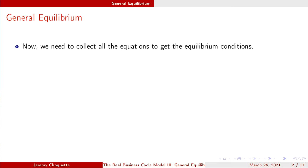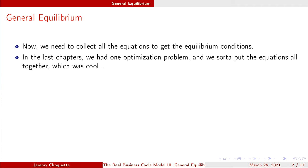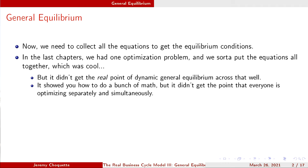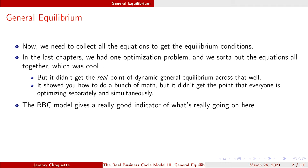We already did the optimization for the household and the firm. Now we collect all of those equations into one giant system to get all of our equilibrium conditions. The main point of this dynamic general equilibrium is that we have optimizing households and optimizing firms, and when you put them together you get something really useful.